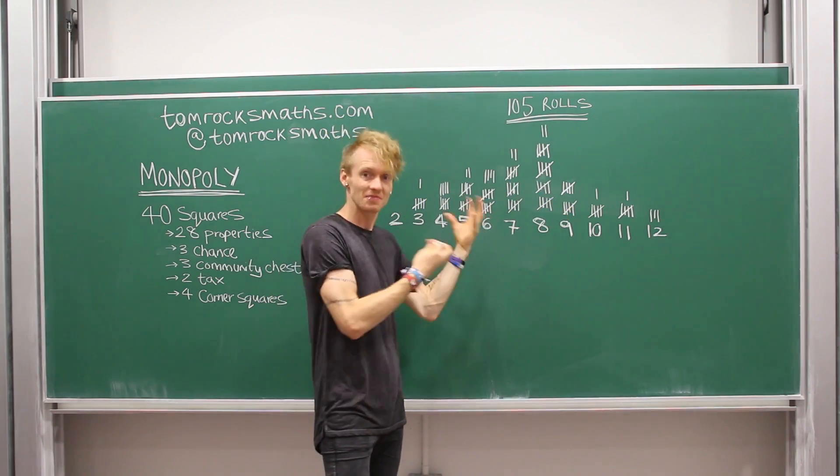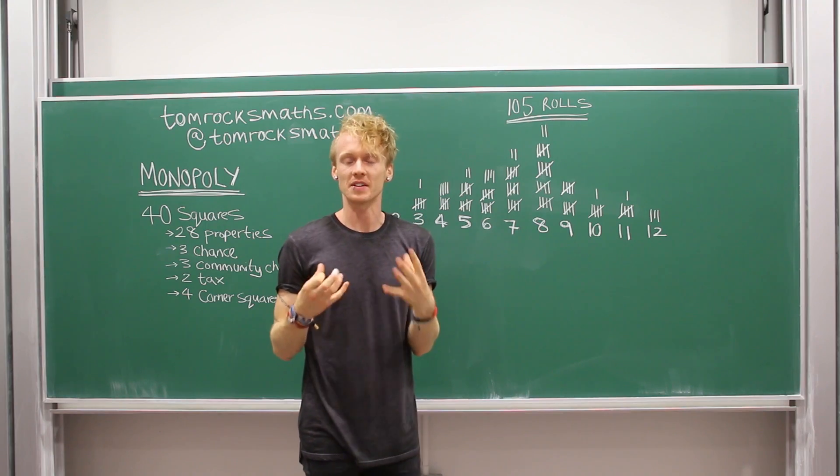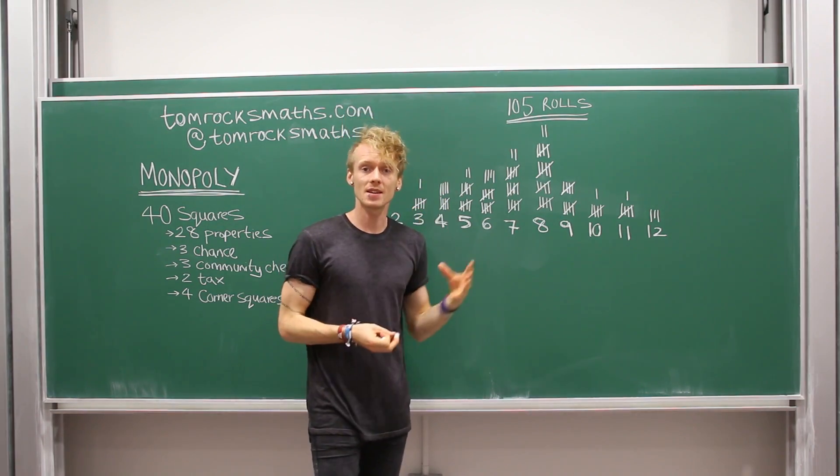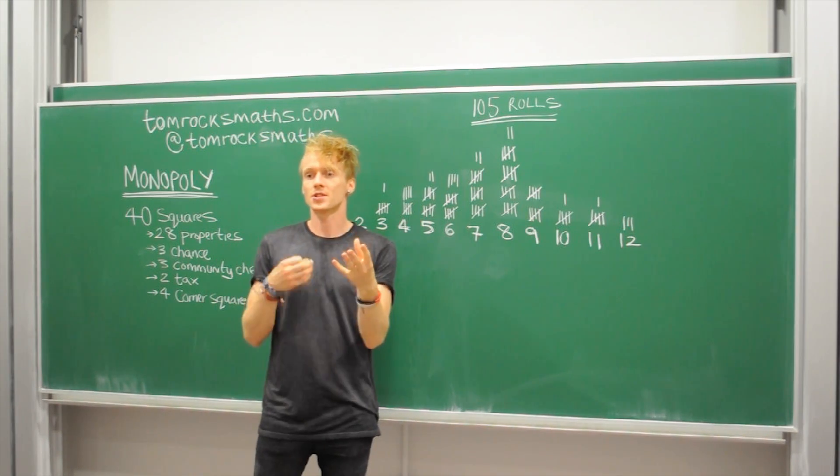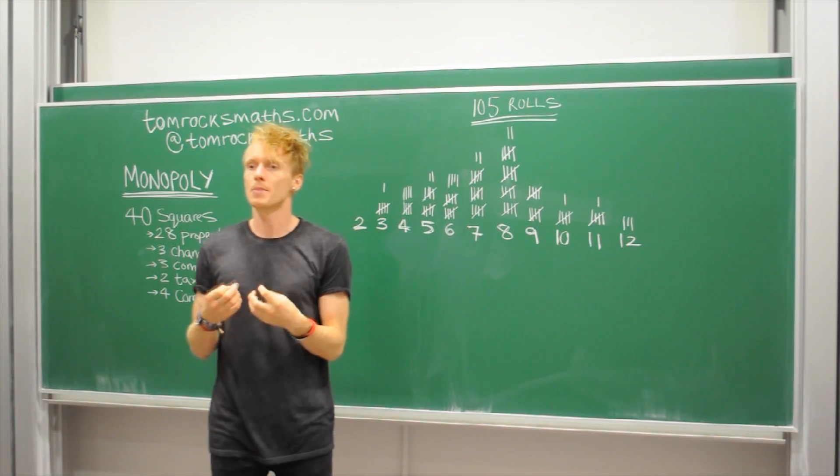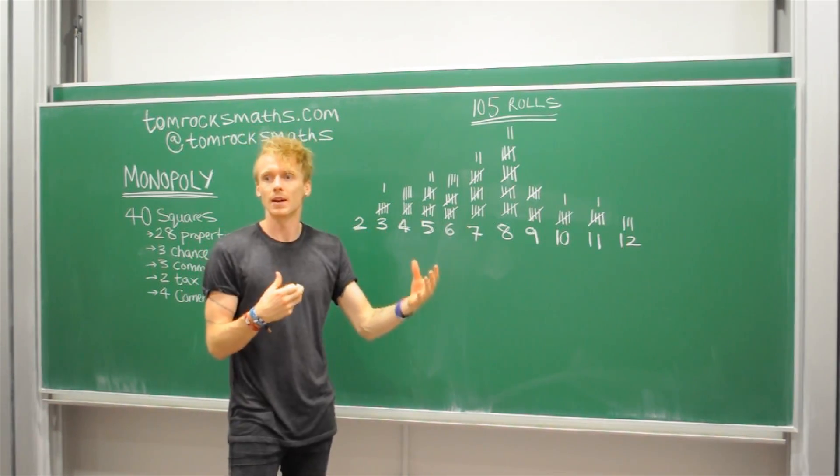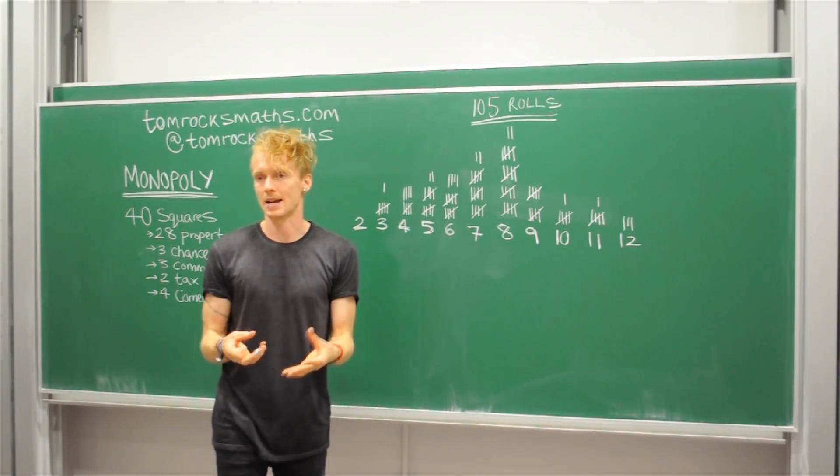This is probability sort of showing its head in real life experiments. And the reason these numbers in the middle are the most common is because they have the highest number of ways of summing to that number with two dice.